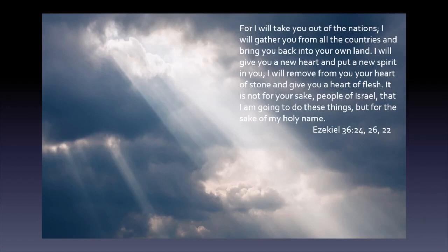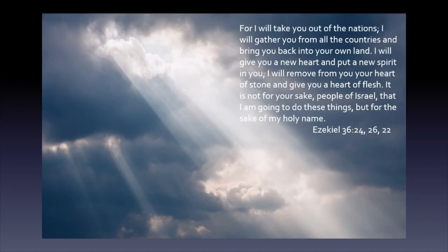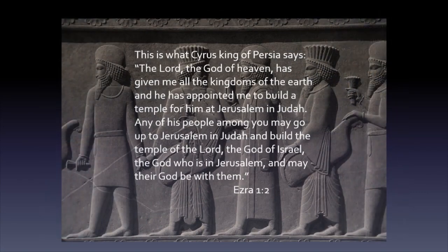Just as God used a foreign power to remove the Israelites from their land years before, he now used another foreign power to bring them back. Persia defeated Babylon, and the new Persian king Cyrus made a remarkable decree: "This is what Cyrus, king of Persia, says: The Lord, the God of heaven, has given me all the kingdoms of the earth, and he has appointed me to build a temple for him at Jerusalem and Judah."